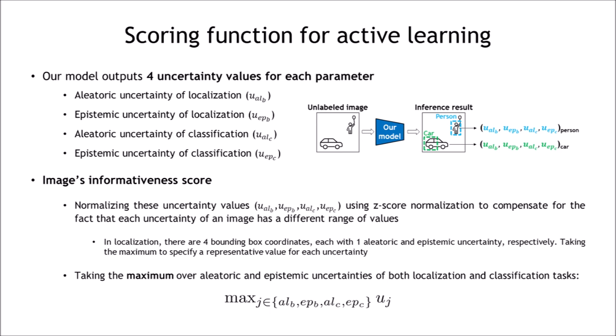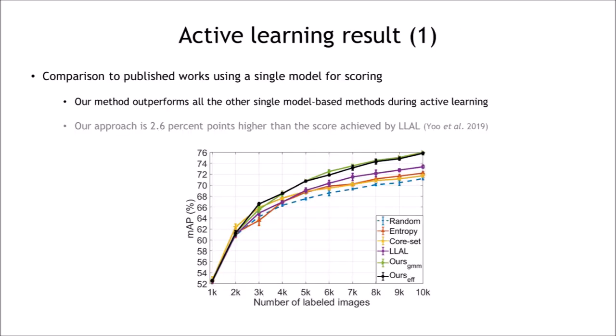Experimental results of score aggregation functions based on several combinations of these uncertainties are presented in our paper. This is an active learning comparison to published works using a single model for scoring. We use Pascal VOC dataset in this experiment. As shown, our method outperforms all the other single model-based methods during active learning.